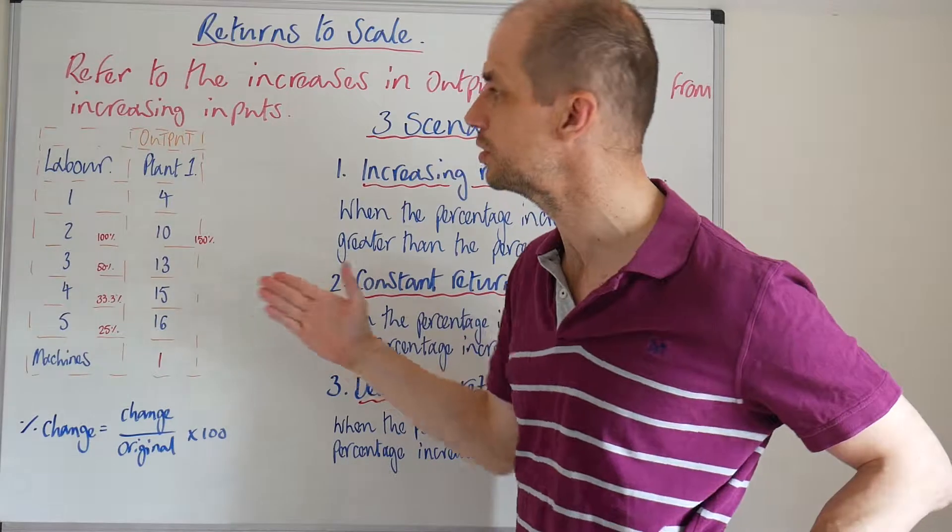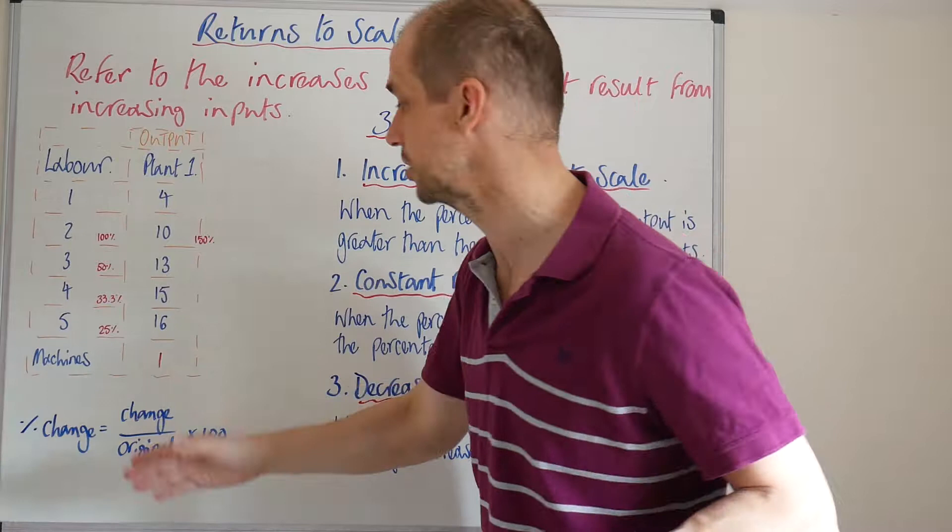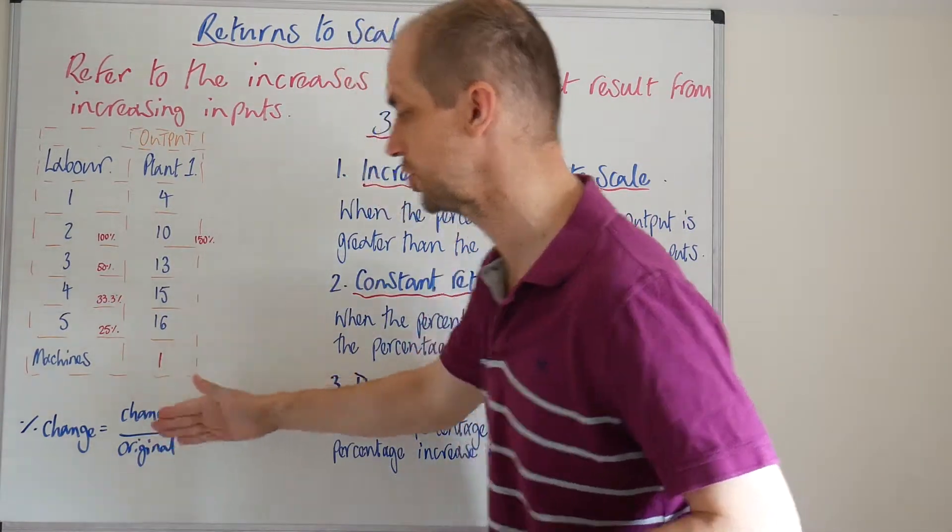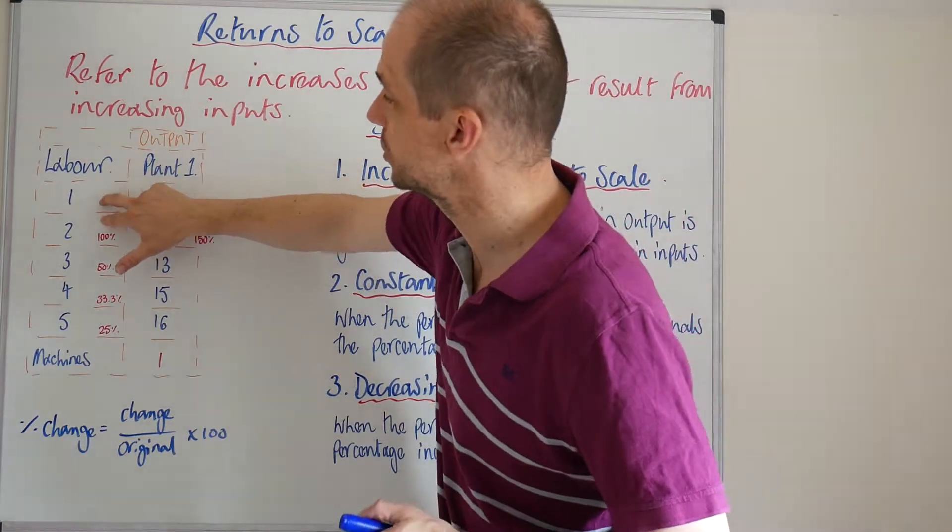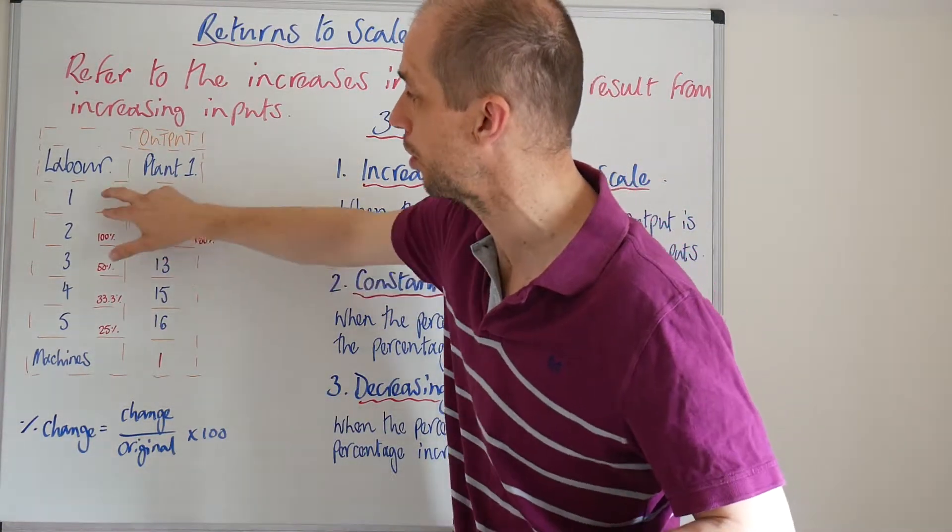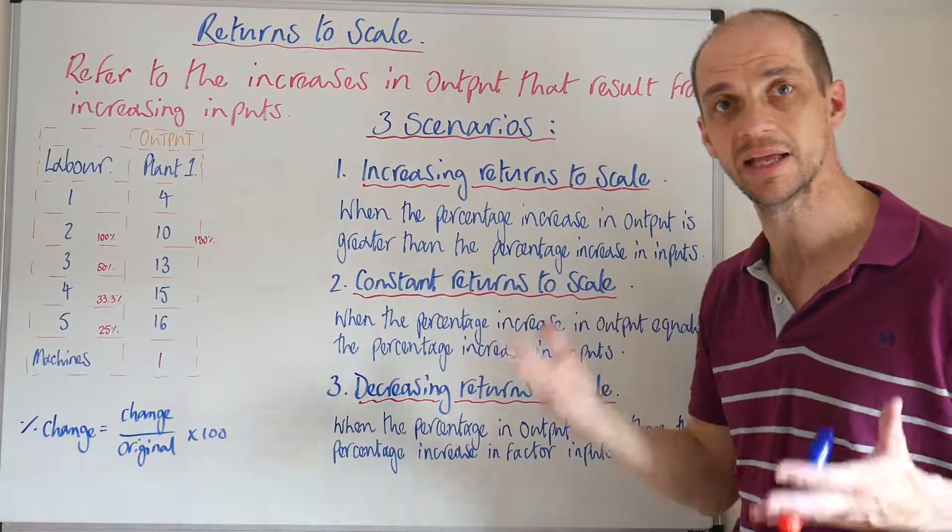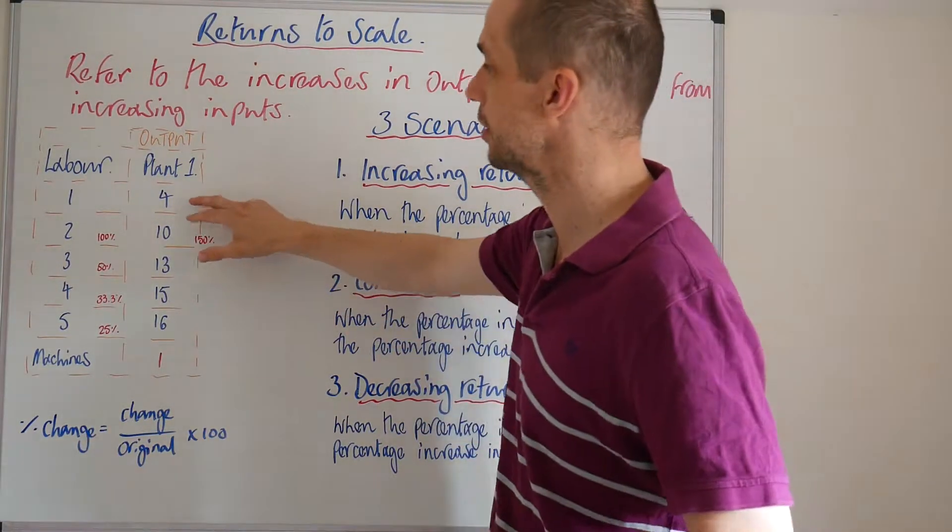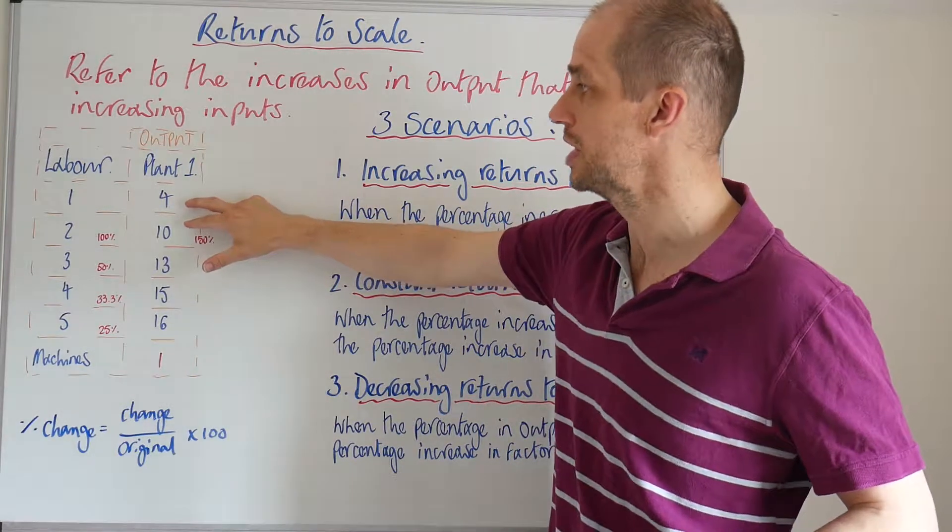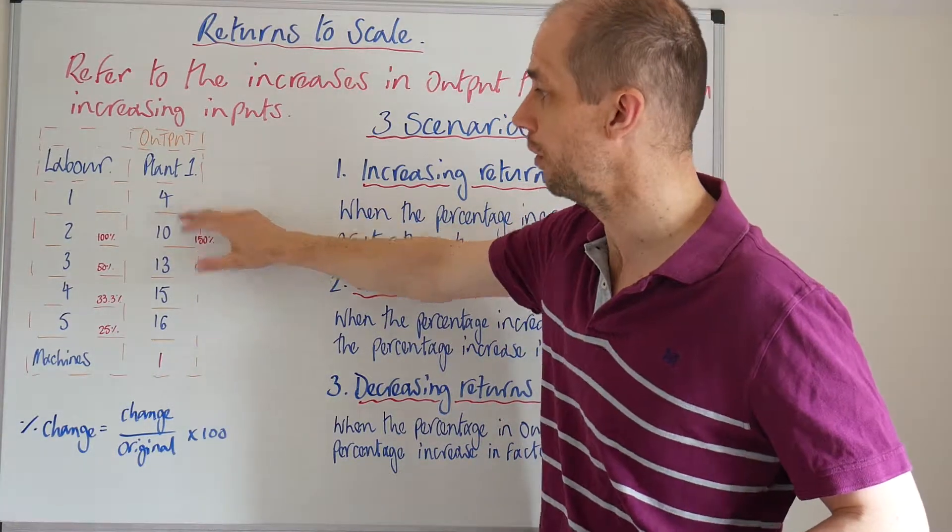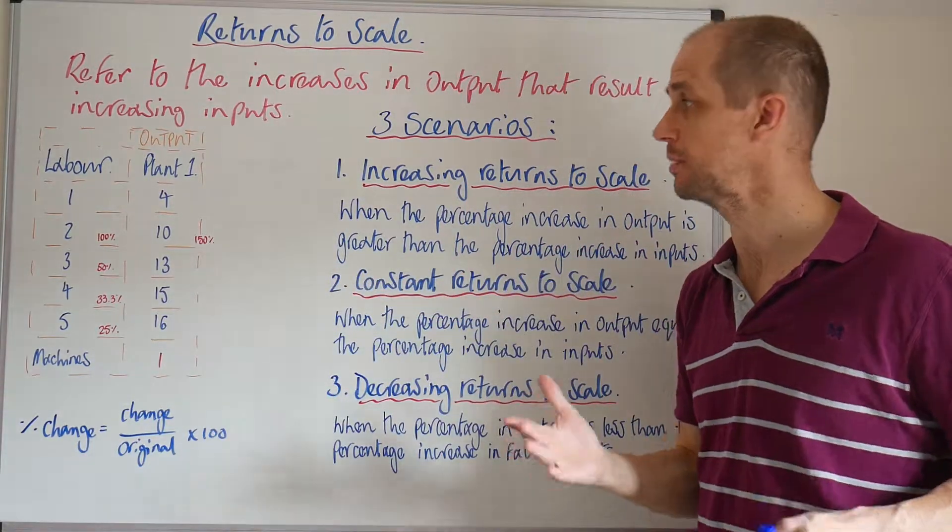To help you establish these differing returns to scale, it's useful to use the percentage change formula. You've got change divided by original times 100. We can see that we're increasing our factor inputs by 100% as we move from one labourer to two labourers. That is an increase of 100%. But look at what we also see here. We see the actual output increase from 4 through to 10. And that is actually a 150% increase.